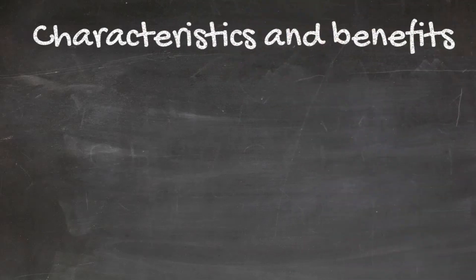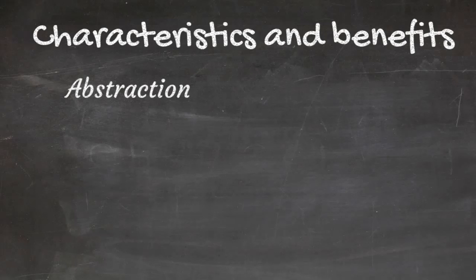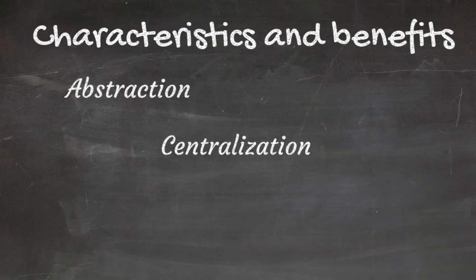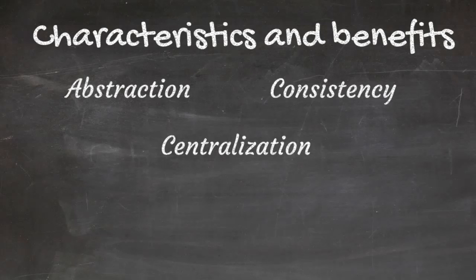Key characteristics and benefits of the repository pattern include abstraction. It provides an abstract layer for data operations, allowing developers to work with data using high-level methods rather than dealing with low-level data access code. Centralization: data access logic is centralized within the repository, making it easier to manage, maintain, and modify. Consistency: it enforces a consistent way of interacting with data across the application, ensuring that data-related operations follow the same patterns and conventions.